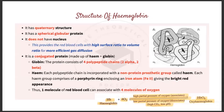Structure of hemoglobin: it has a quaternary structure and is a spherical, globular protein. As you can see in the picture, it does not have a nucleus, and this provides the red blood cells with a high surface-area-to-volume ratio for more efficient gas diffusion, giving extra space for association and dissociation of oxygen. It is a conjugated protein made up of heme and globin. The globin part consists of four polypeptide chains — two alpha chains and two beta chains. Each polypeptide chain is incorporated with a non-protein prosthetic group called heme.